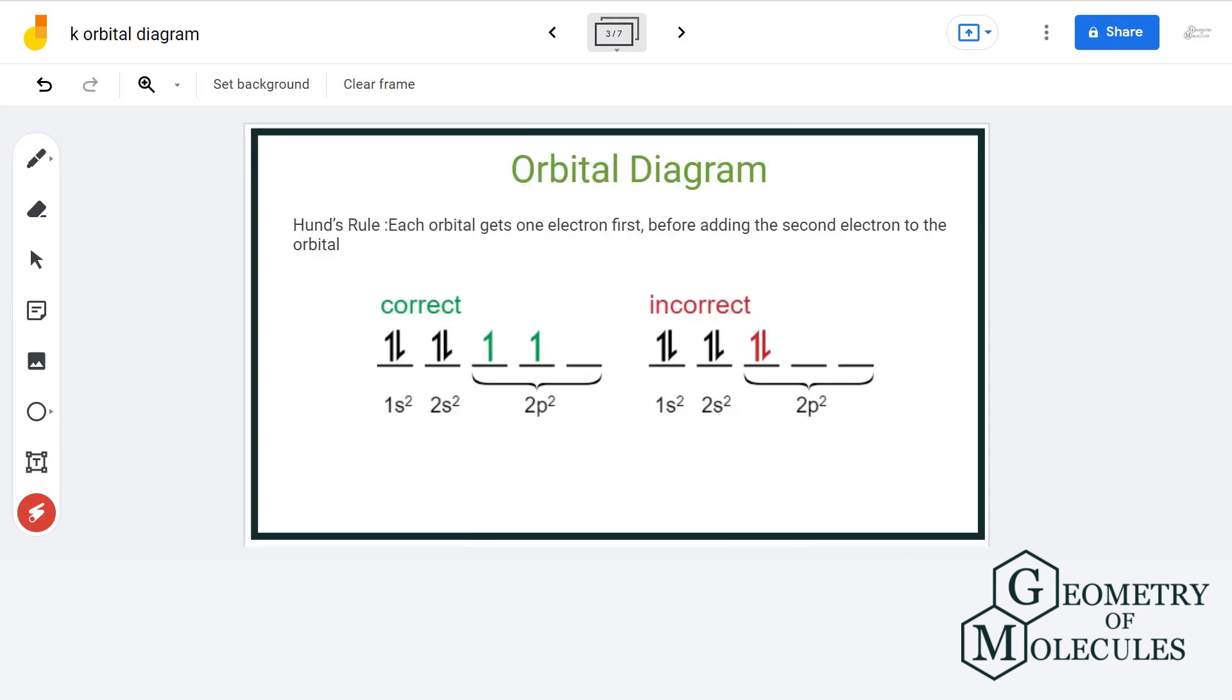Now the second rule is Hund's rule that explains the arrangement of electrons in orbital of sublevel. Well electrons tend to be as far as possible from each other so as to minimize the repulsion. So if there is a case where there are empty orbitals available in any sublevel, then instead of pairing they will choose to be arranged separately. Now that makes sense why this arrangement is more stable than this one.